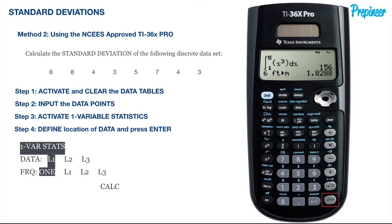Now we need to define the location of our data. When you choose one variable statistics you will be brought to a screen similar to the one shown. This is where we will define the column where we input our data points. From our previous step we know that our X data is in the L1 column and that the frequency is one. Press enter two times and then a third time once calc is highlighted to carry out the calculation.